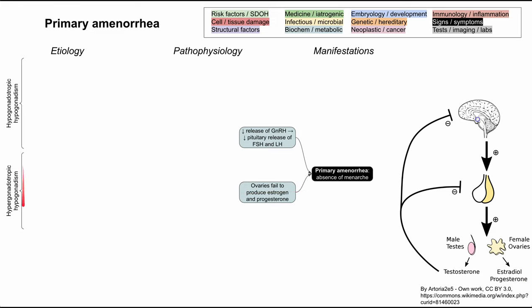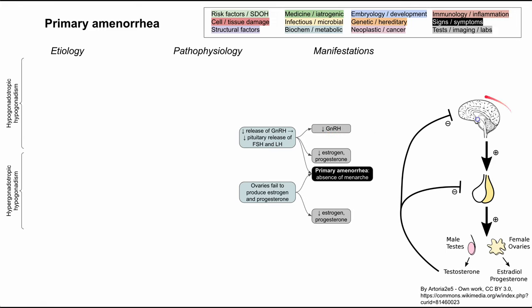In hypergonadotropic hypogonadism, the ovaries themselves are failing to produce estrogen and progesterone. You can look at the actual hormone concentrations to differentiate the two. In both, estrogen and progesterone are low. In hypogonadotropic, GnRH is also low, which results in low FSH and LH from the pituitary gland.